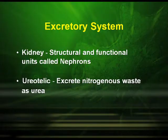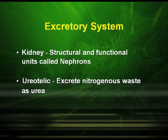The excretory system of frog includes a pair of kidneys, the ureters, urinary bladder and cloaca. In the kidney, the structural and functional units are the nephrons. Frogs are ureotelic organisms because they excrete nitrogenous waste in the form of urea.